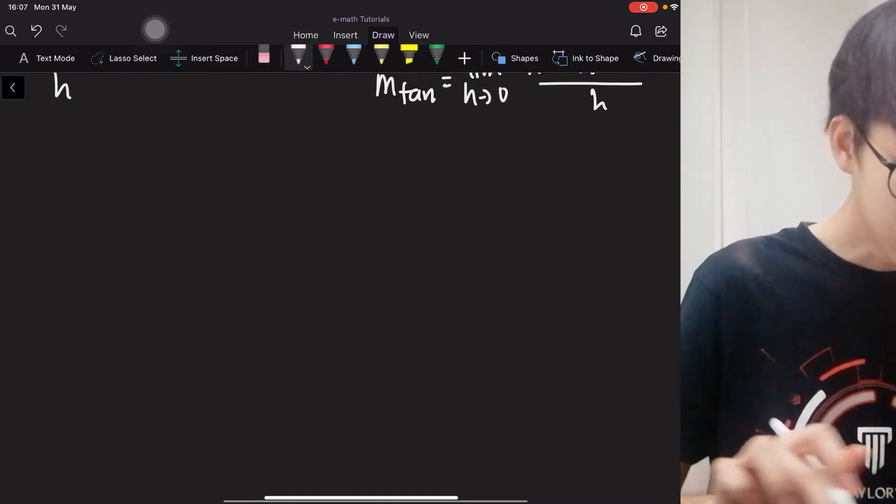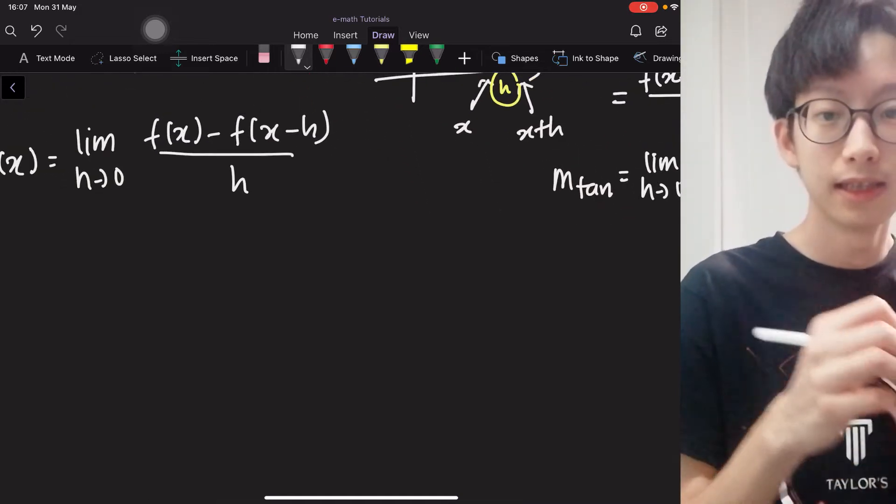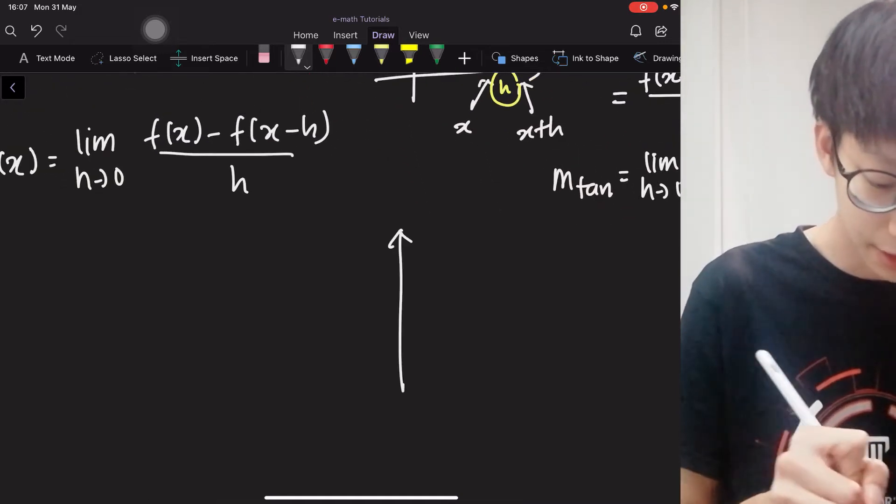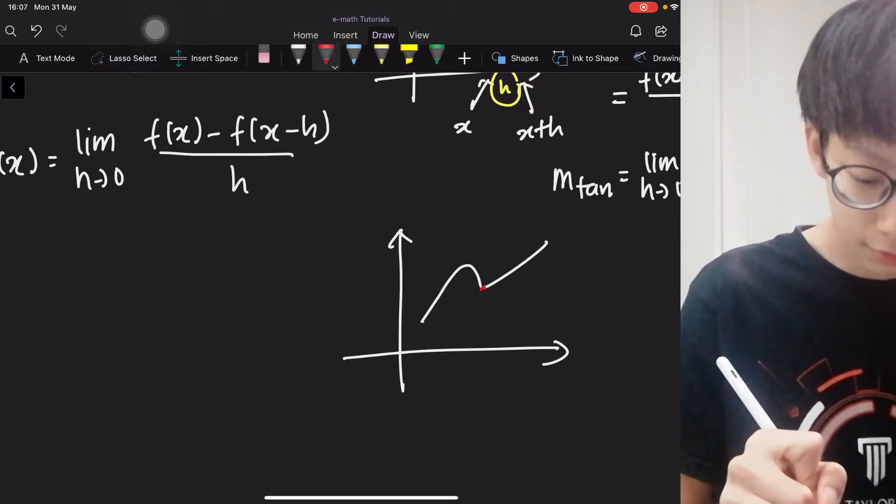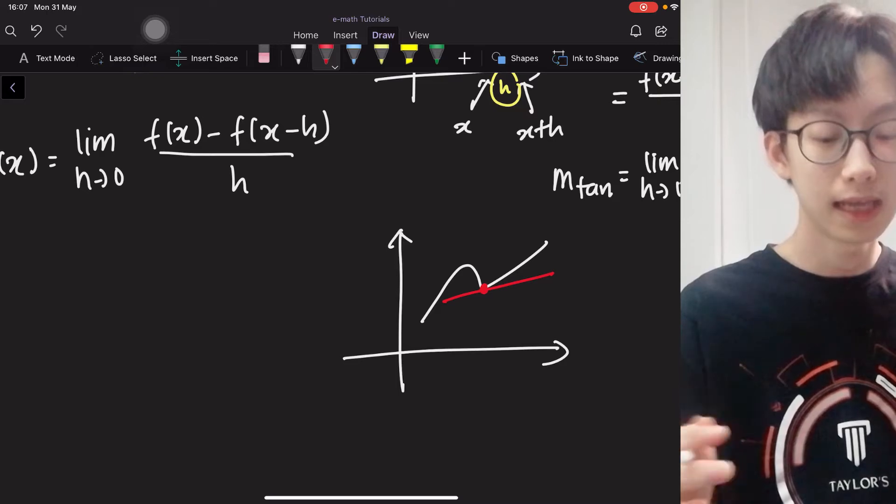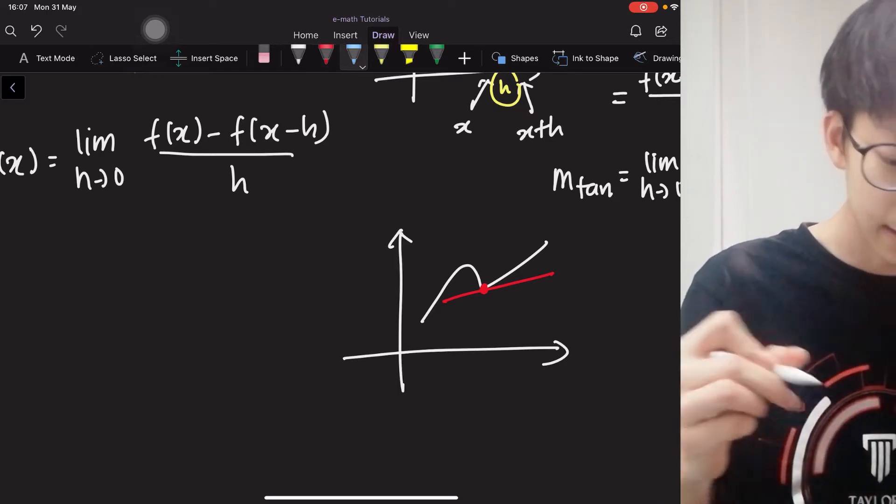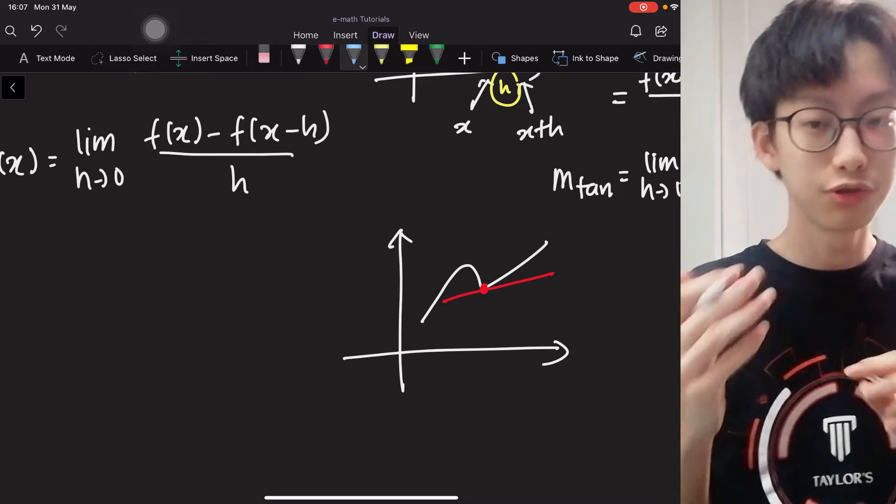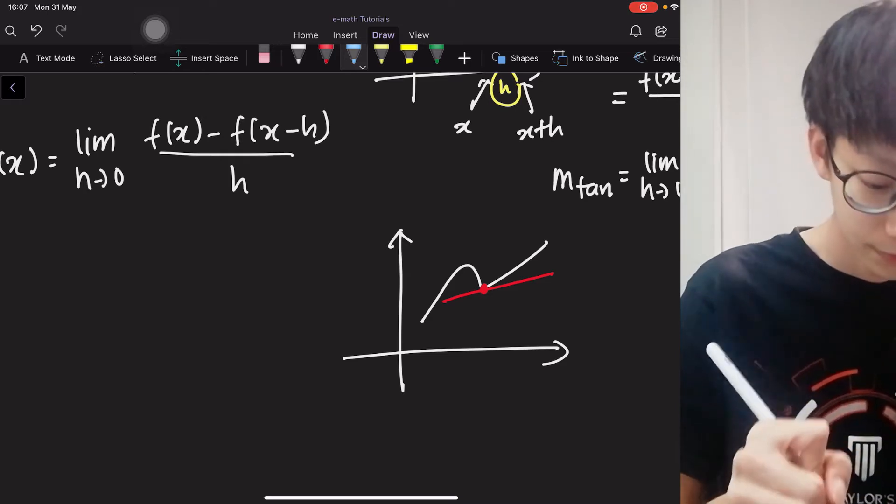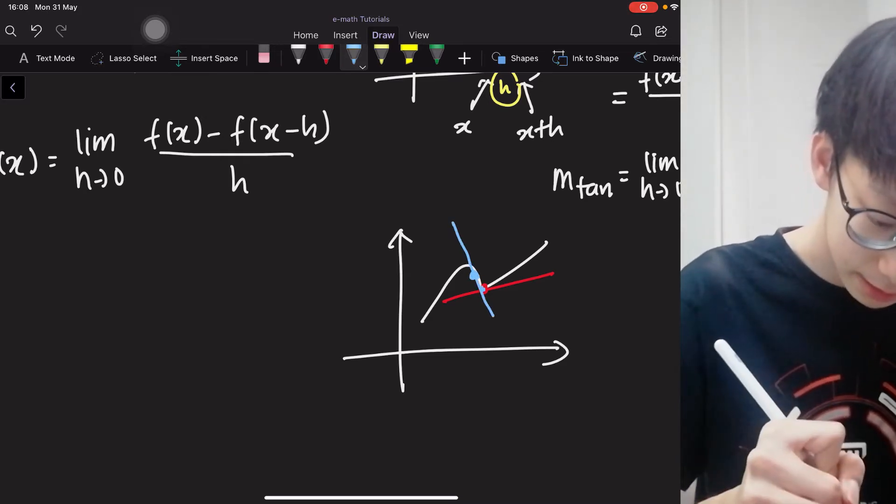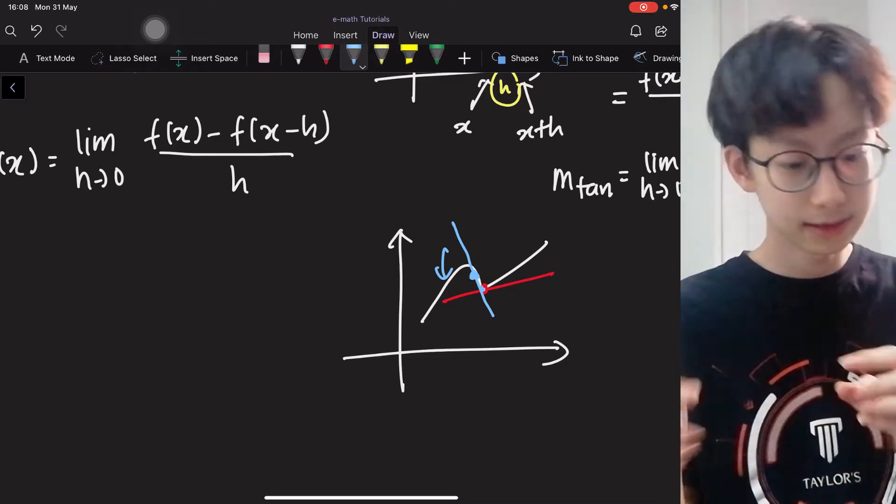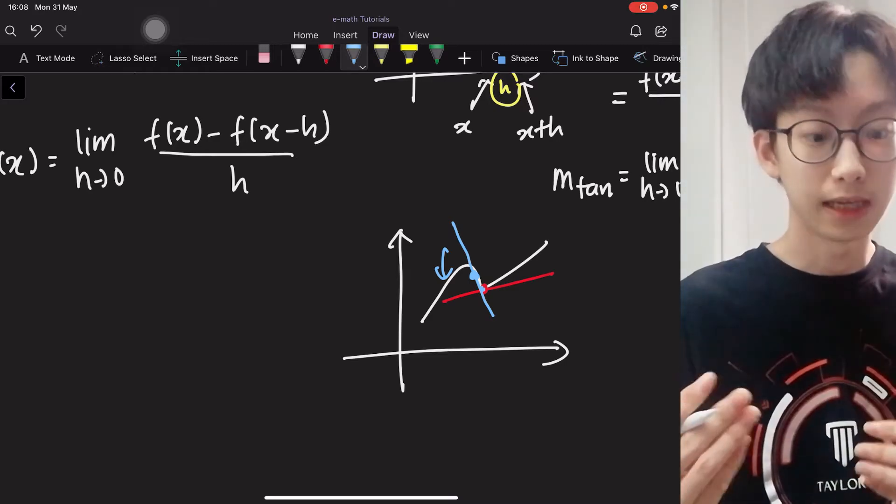All right? So the meaning of the second expression here is that you still have the curve, and you want to find the slope of tangent line at this point. And this time, instead of from the right, you choose a point at the left. And you draw a secant line, and then you approach like this until it becomes a tangent line.